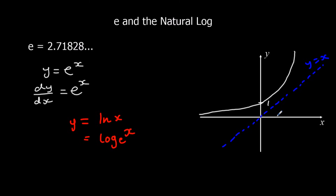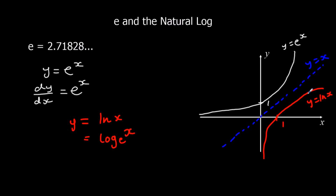That's the inverse of e to the power of x. So where the original crossed the y-axis at 1, the inverse crosses the x-axis at 1. This one comes up never touching the y-axis and it's a reflection in the line y = x. So this is the graph of y = e^x and this is the graph of y = ln x.